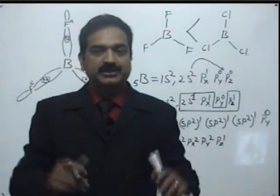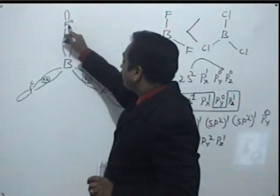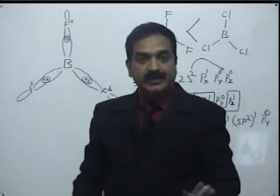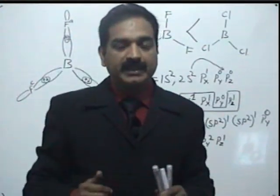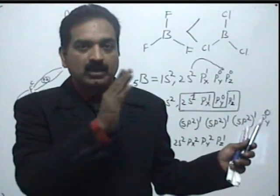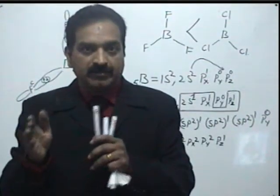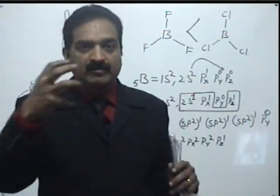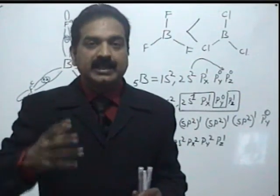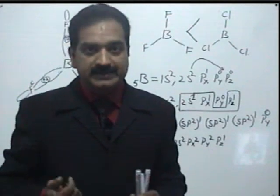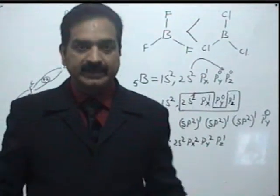Now, in fluorine the electron density is very high. Why? Because fluorine is in the second period. As we move from left to right in the periodic table — from boron to fluorine — atomic volume gradually decreases, and as atomic volume decreases, electron density gradually increases. So in fluorine, the electron density is very high.